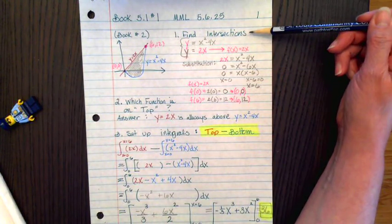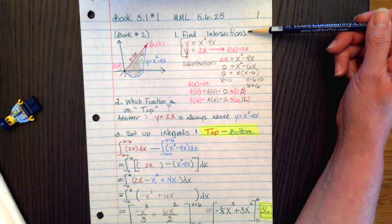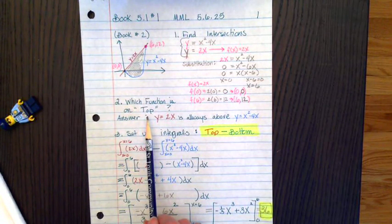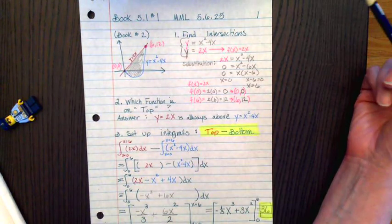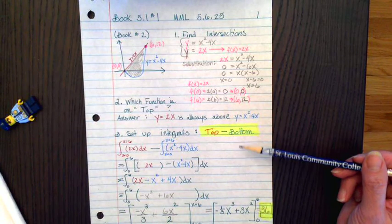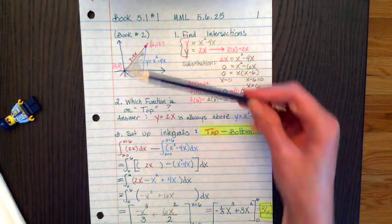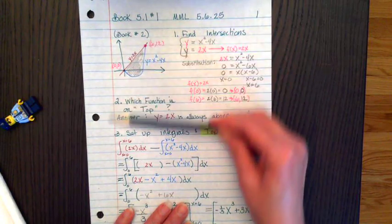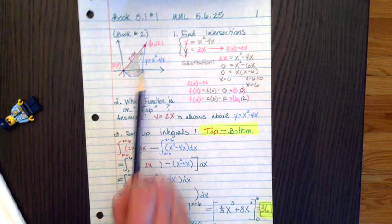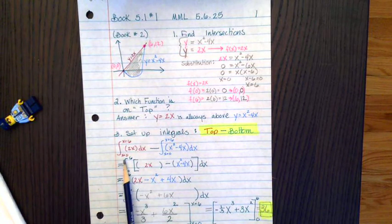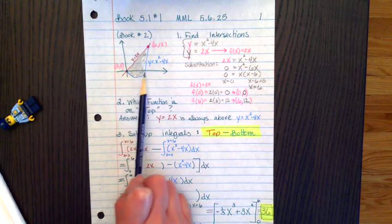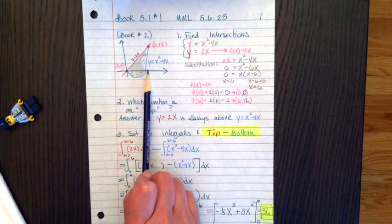The next step is to think through which of the functions is on the top, which is the greatest of the two, which has a greater height. Notice that this red function is above the blue, x squared minus 4x. So what we're going to do in step 3 is to track the area below this red curve. So the area below 2x, that's all of this area. So that's the integration from x equals 0 to x equals 6. Do you see where that 0 and 6 came from? It came from the two intersection points.